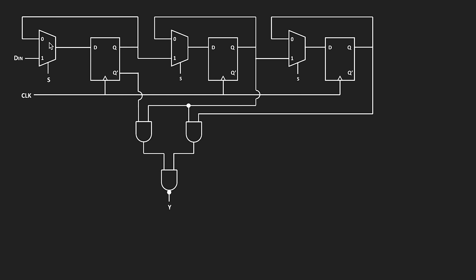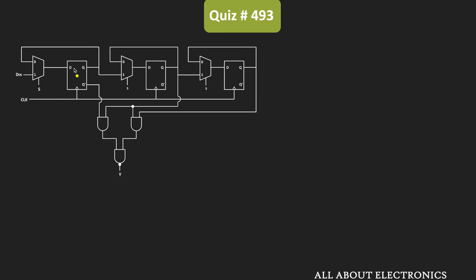Whenever the S input is equal to 0, the output of the flip-flop is connected back to the input side. That means whenever S input is 0, the flip-flop will retain its present state. And whenever S input is 1, for the first multiplexer, this DIN input will be applied to the output side.